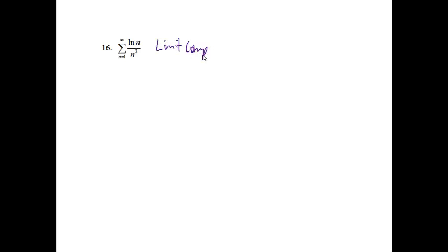The series from n equals 1 to infinity of ln(n) over n³. I decided to use the limit comparison test on this one. Mostly because if we have a ln in the problem, it's easier to compare it to something. I tried 1 over n³ first, and that did not work out — it didn't match up with the rules. So I tried something a little smaller: 1 over n squared seemed to work quite nicely.